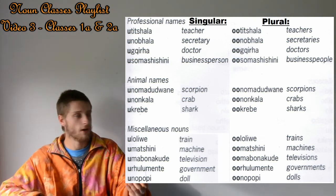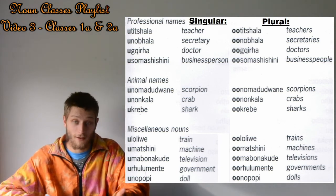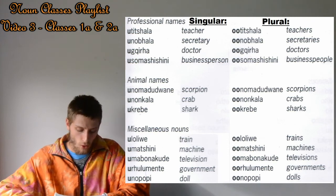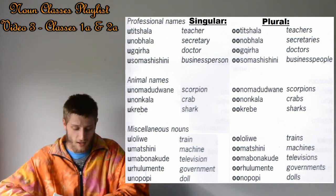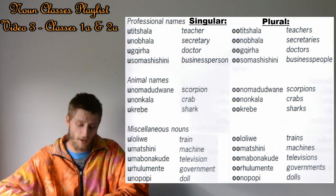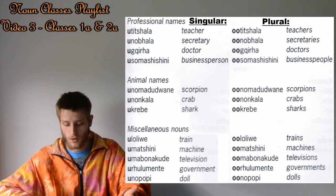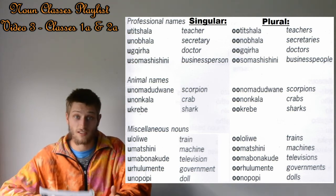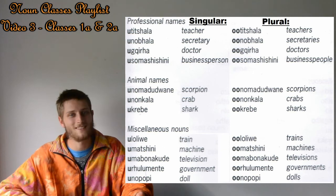Now here are some animal names with the plural 'oo'. Watch out for these, but they're not very common words you'll use. For example, uNomadudwane — a scorpion or crab. These are words you're unlikely to use very often, so don't stress about it. See it as an opportunity to learn a cool language rather than feeling overwhelmed. There's also miscellaneous nouns like uloliwe, which means train — the plural would be ololiwe. You just build up your vocabulary over time.